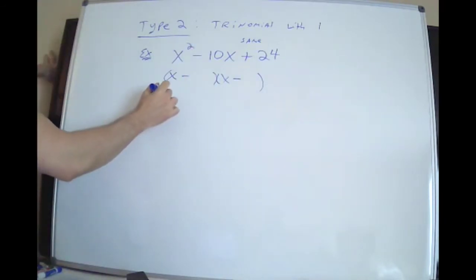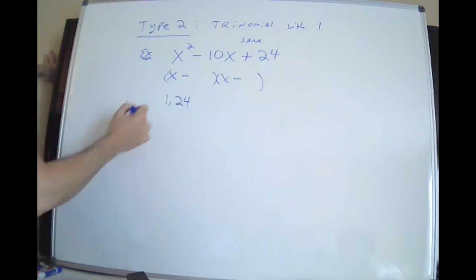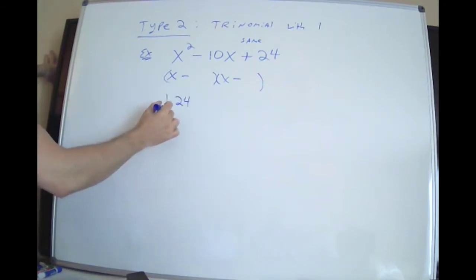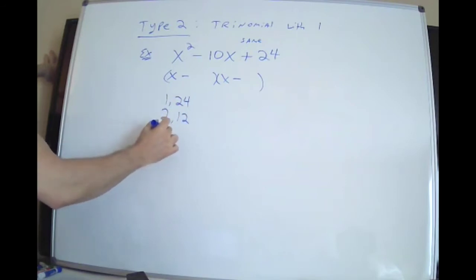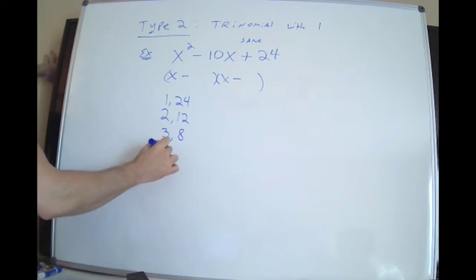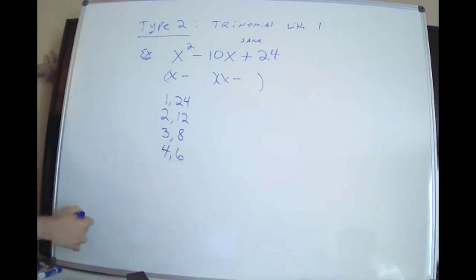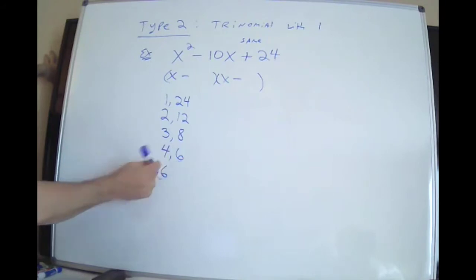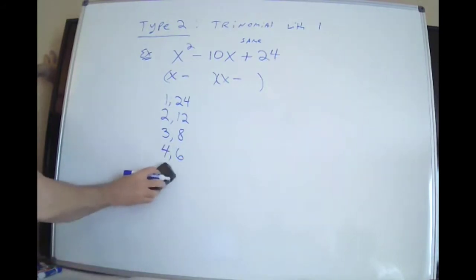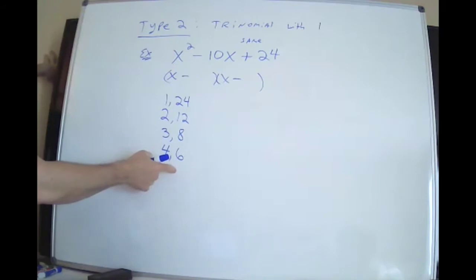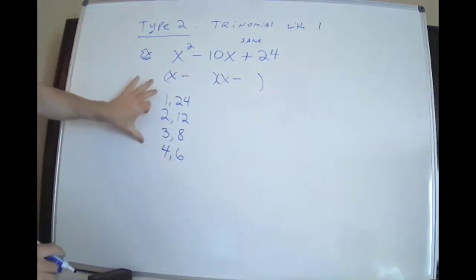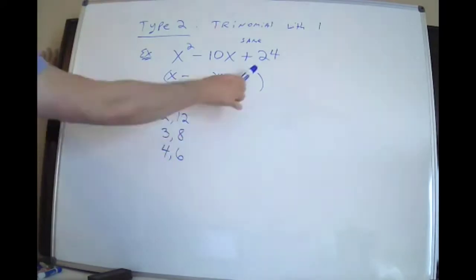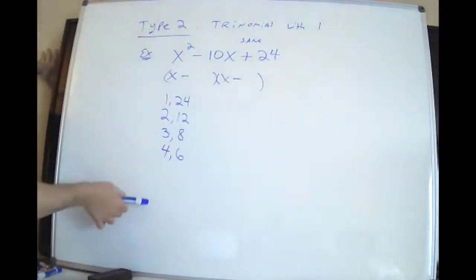Now I'm going to list all of the pairs of numbers whose product is 24. So it's one and 24. Two and 12. 24 is divisible by three — three and eight. 24 is divisible by four — four times six is 24. 24 is not divisible by five; it doesn't end in a five, so that's out. Six — I already have six. You're not going to write six and four if you already have four and six. So these are the only four pairs of numbers whose product is 24. Anything else would be a repeat.